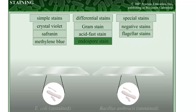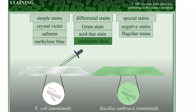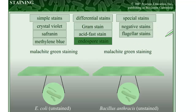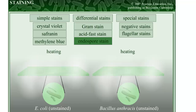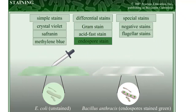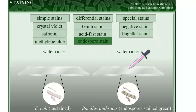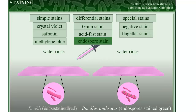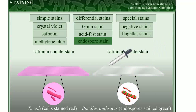Some bacteria produce endospores. Endospores form inside the cytoplasm of the bacteria and are highly resistant to desiccation, heat, and radiation. Their cell walls are impenetrable to most chemicals. The endospore stain uses heat to drive the dye malachite green into the endospores. After heating with malachite green, the slide is rinsed with water to remove the dye, then counterstained with safranin. In the final sample, vegetative cells are pink and endospores appear green. The endospore stain is a useful tool in classifying bacteria.